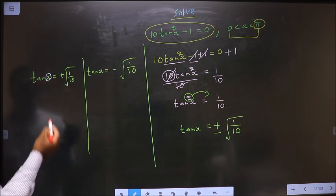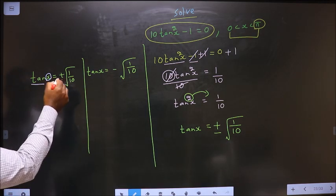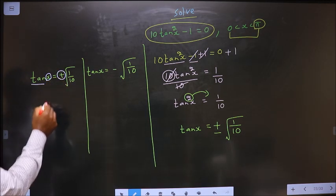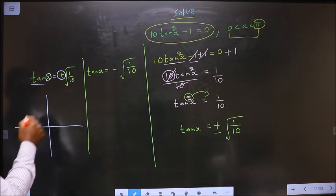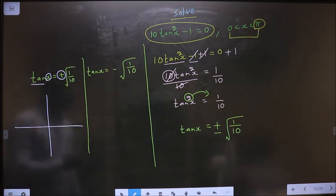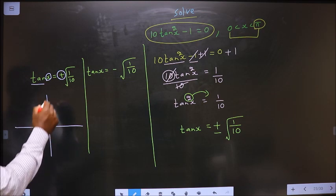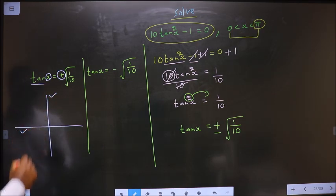Now to get the values for x, here we have tan and here it is positive. So now we should check in what all quadrants is tan positive? It is all silver tea cups. Tan is positive in the first and in the third.